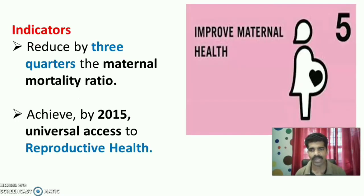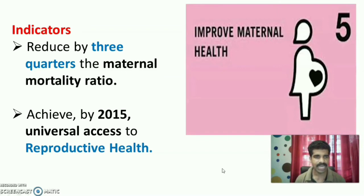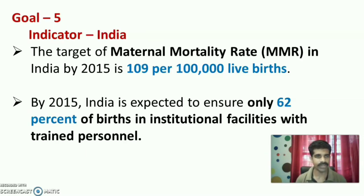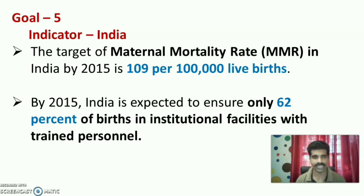Goal 5 is to improve maternal health. The indicators were to reduce by three-quarters the maternal mortality ratio by 2015, and to achieve universal access to reproductive health by 2015. For India, the target for the maternal mortality rate (MMR) by 2015 was 109 per 1 lakh live births. India was also expected to ensure 62% of births take place in institutional facilities with trained personnel by 2015.